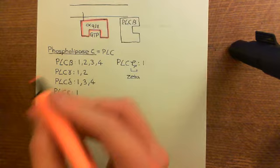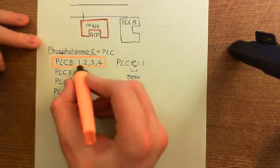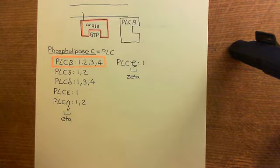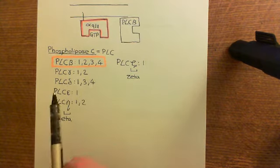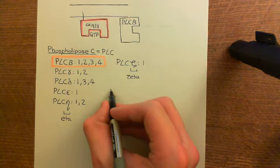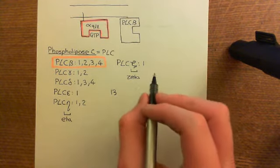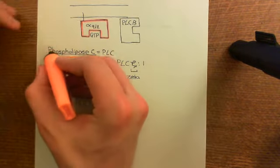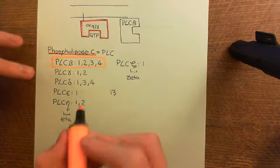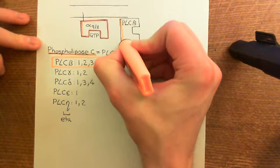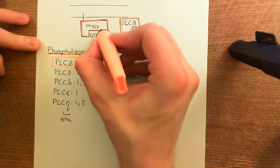The ones we are interested in are the phospholipase C beta family — the four genes and their splice variants. All 13 genes produce proteins which catalyze the same reaction. What differs between the different families is how they're activated. The phospholipase C beta family of enzymes are activated by alpha-Q/11 proteins.